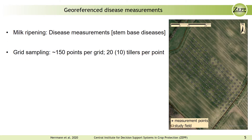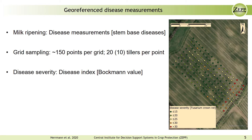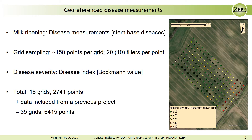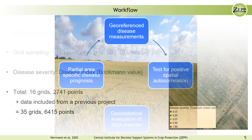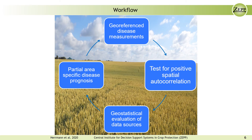On each sample field, disease measurements were carried out at about 150 points by sampling 20 tillers per point — in 2018, only 10 tillers per point were sampled. The points were aligned as a grid. Disease severity was estimated by visually examining the tillers and calculating a disease index, the so-called Bogman value. In total, 16 sample grids were installed between 2018 and 2020, consisting of 2,741 points. Additionally, data was included from a previous project, resulting in a total of 35 grids and 6,415 points.